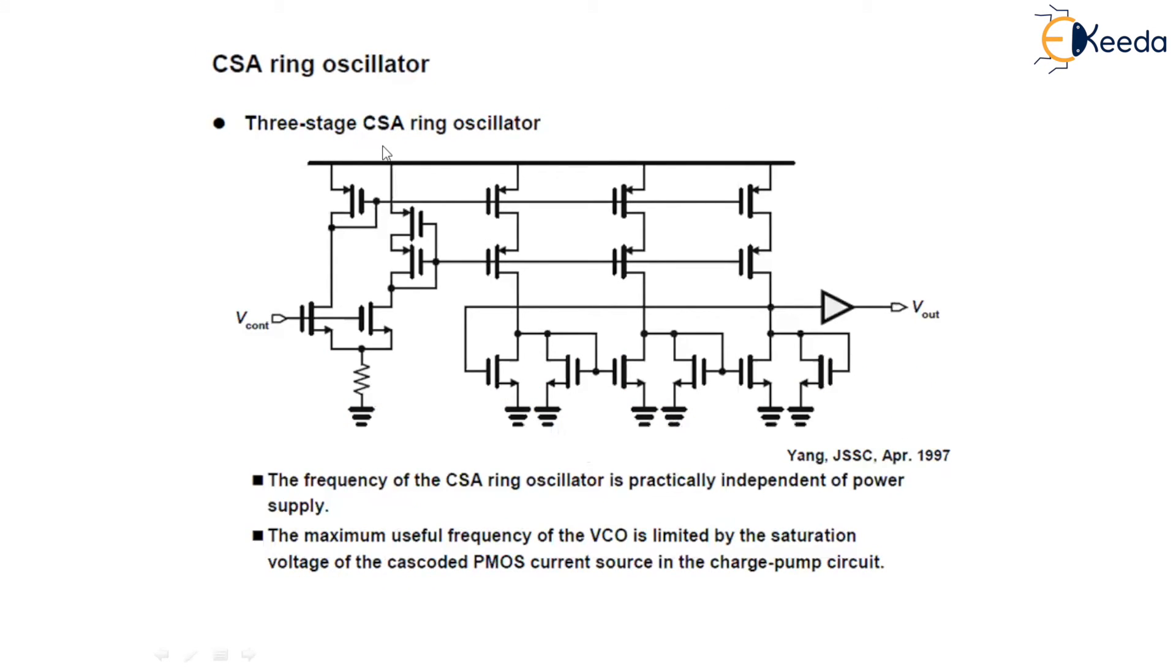This is the specification of a CSA ring oscillator, where the three-stage CSA ring oscillator can be drawn like this. Same, but here three stages are used. The frequency of this CSA ring oscillator is practically independent of power supply. And the maximum useful frequency of this VCO is limited by the saturation voltage of the cascoded PMOS current source in the charge-pump circuit. This is all about the design of VCO.